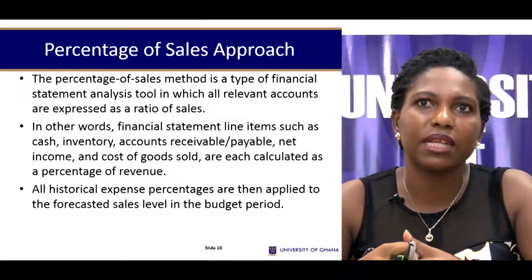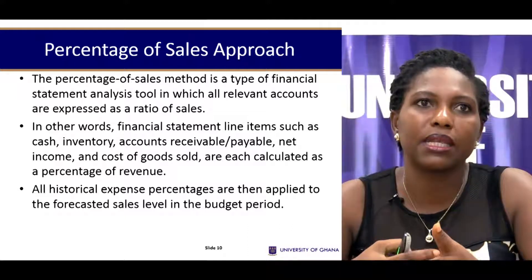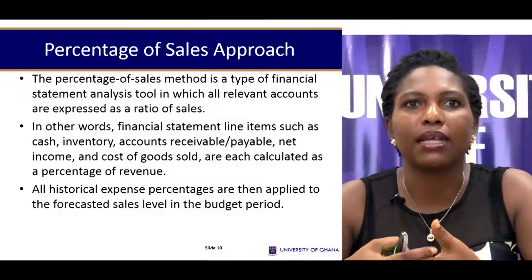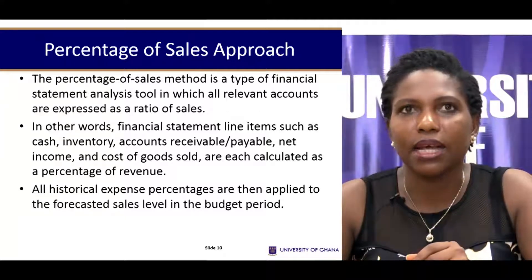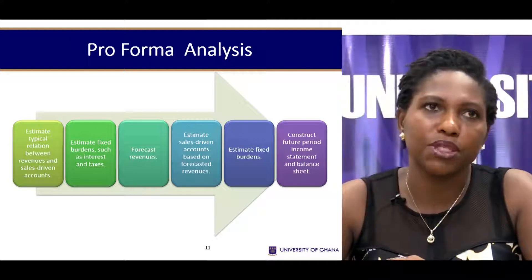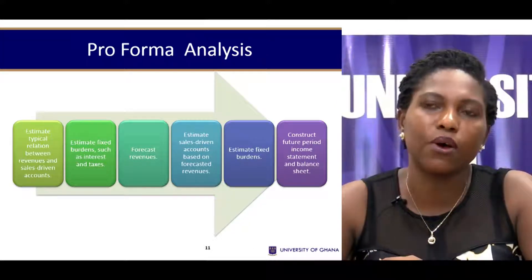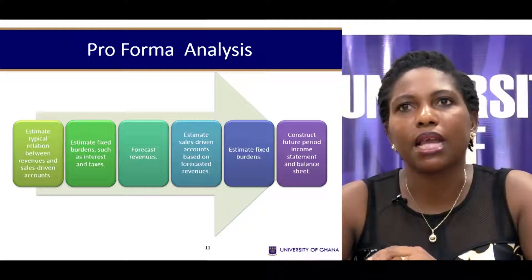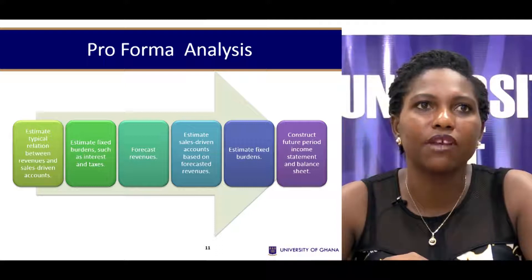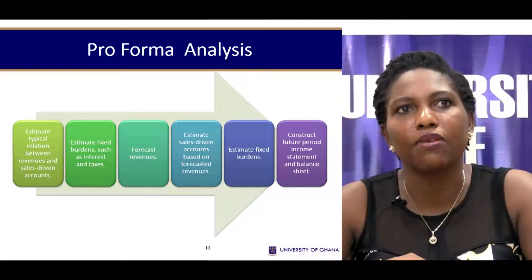Financial statement line items such as cash, inventory, accounts receivable, payables, net income, etc. will be calculated as a percentage of revenue, and these identified relationships or ratios will be forecasted to apply to the next sales level in the forecasted period. In doing that, we normally come up with what we call a pro-forma financial statement — which can be a pro-forma income statement or, in layman's terms, an estimated income statement or estimated balance sheet. You start by identifying the relationship between sales revenue and items normally referred to as sales-driven accounts.